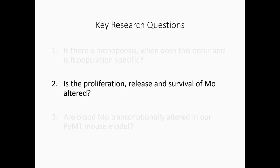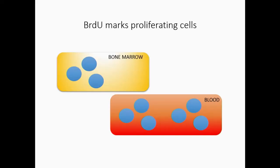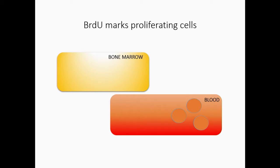Moving on, we needed to check whether the proliferation, release and survival of monocytes is altered. There was a lot of suggestion in the literature that perhaps outside steady state, the survival of these monocytes is altered. A seminal paper by Simon Yoner showed a really eloquent technique using BrdU. BrdU is a thymidine analog, so it incorporates into any proliferating cell. And the reason it's perfect for monocytes is because they proliferate in the bone marrow — they don't proliferate in the blood. They then move into the blood as Ly6C high, and as they differentiate into Ly6C low, we can track these being released into the blood, and then eventually leaving the blood.